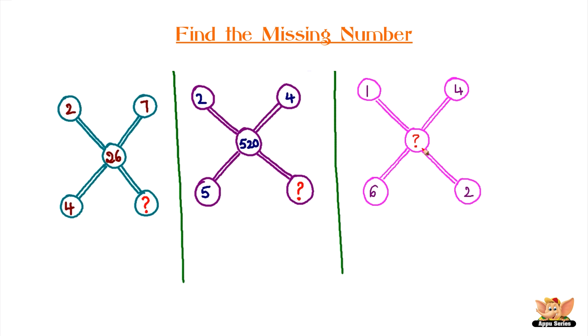Find the missing number. We have three sets of circle figures. Each set has a number in them, but one circle in each set is missing a number. Can you try and find out what that missing number is? Here's a clue: all three missing numbers are the same.